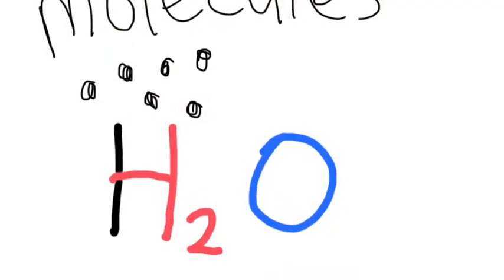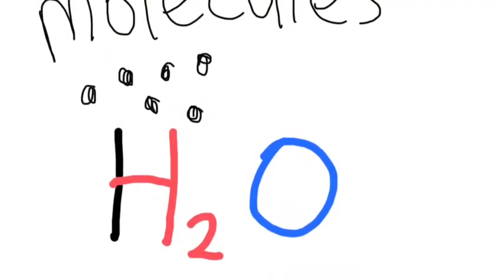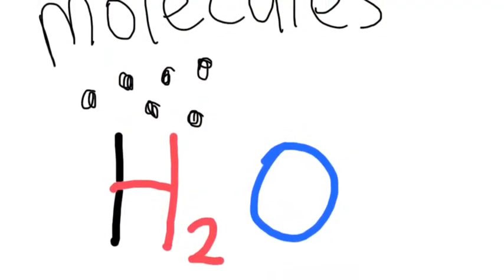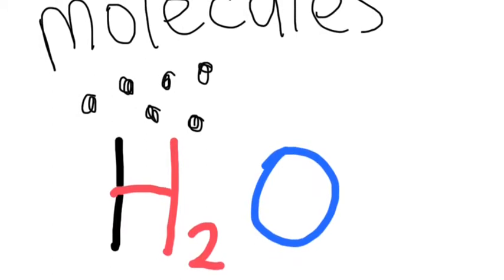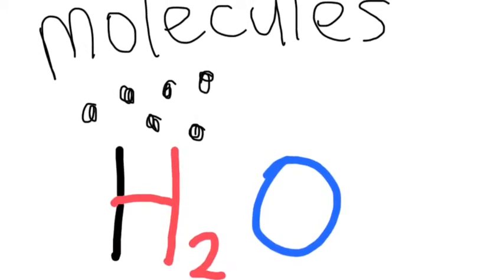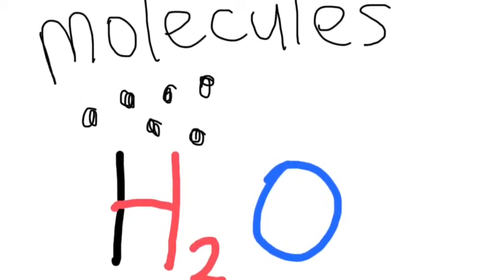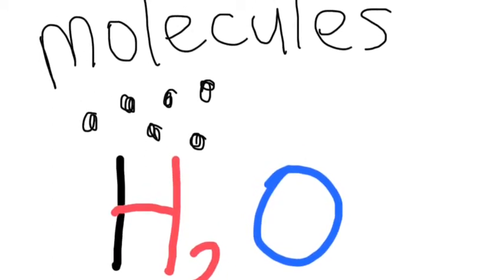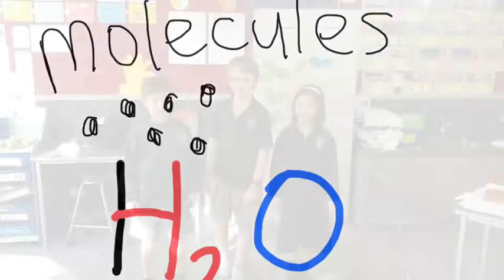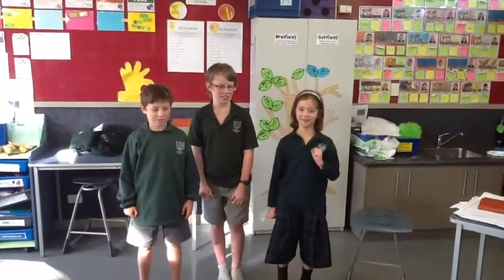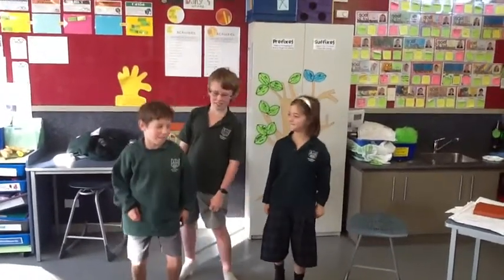This is what we learned from our experiment. Everything is made of molecules and water is H2O. These are our hydrogen molecules and this is our oxygen molecule. This is what they do when they're hot.